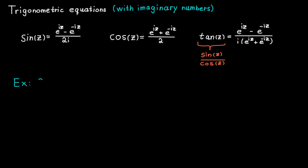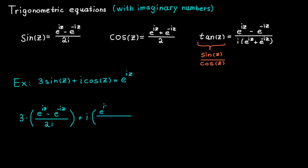Let's try another example — try to do it yourself first, since the method is essentially the same. We start by using the definitions to rewrite the equation. The next step is to simplify this quadratic equation by multiplying both sides by 2i.